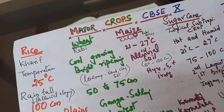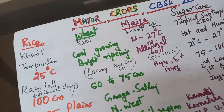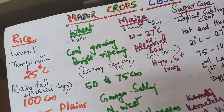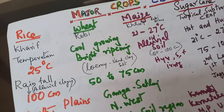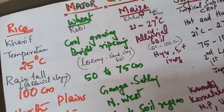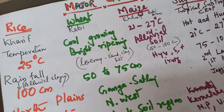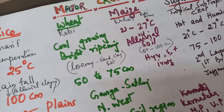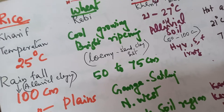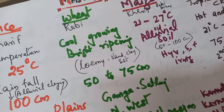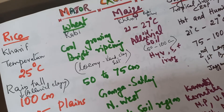Then wheat. It is a rabi crop. The kharif crop starts in the monsoon, while wheat is a rabi crop. It needs a cold growing season and a bright ripening season — about 20 degrees Celsius during sowing and about 35 degrees Celsius at harvest time. These are the conditions necessary for wheat. The soil needed is loamy soil — that is sandy, clay, and silt. Rice needs alluvial soil and wheat needs loamy soil. Rainfall is 50 to 75 cm. Growing areas include the Ganga-Sutlej area, the northwestern area, and the black soil region of Deccan.